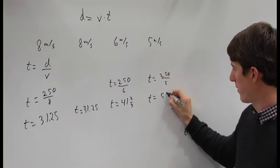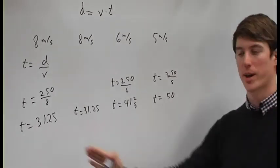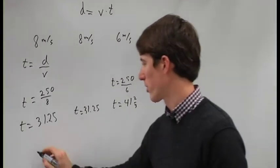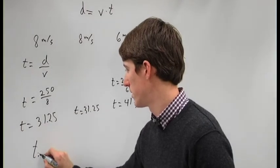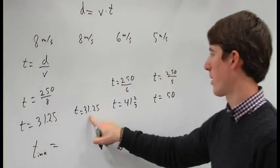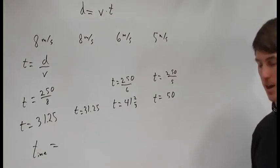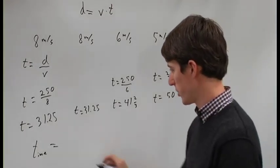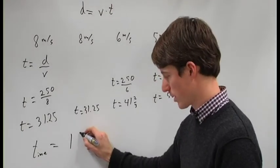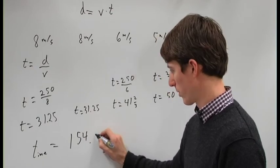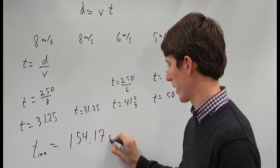This gives us a time of 50 seconds. Now we can add all these times together, so the total time equals the sum of these four numbers. If you add those four numbers up together, you get 154.17 seconds.